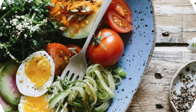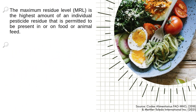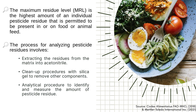Now, discussing a deeper understanding of how these methods work. The maximum residue level, or MRL, is the highest amount of an individual pesticide residue permitted to be present in or on food or animal feed. Thus, it is crucial to apply the available methods to ensure food safety. The process involves extracting the residues from the matrix into acetonitrile, followed by a cleanup process with silica gel to remove other components, and then the analytical procedure to identify and measure the amount of pesticide residue.